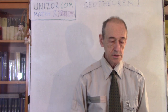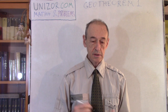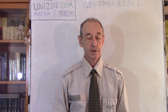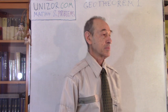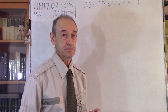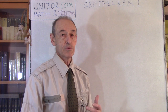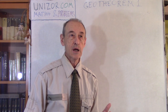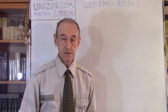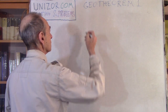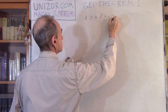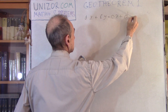Today we will talk about a very elegant and simple theorem in geometry of three-dimensional space — primarily about planes, vectors perpendicular to these planes, and how they are related. First, how planes can be defined in three-dimensional space in Cartesian coordinates. The standard or canonical representation of a plane is A·X + B·Y + C·Z + D = 0.